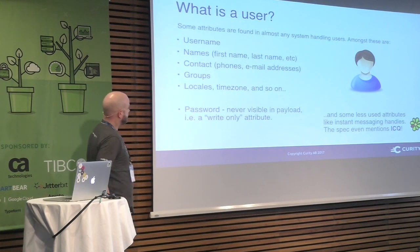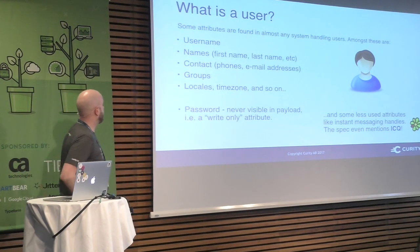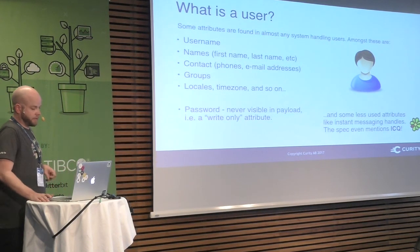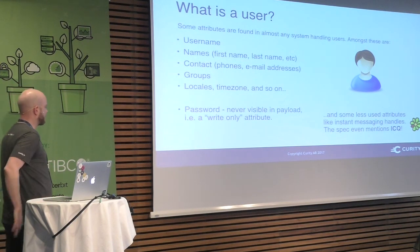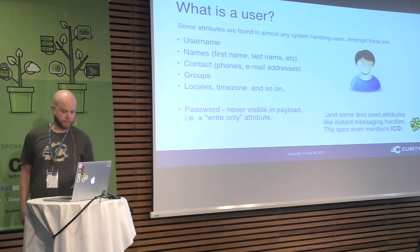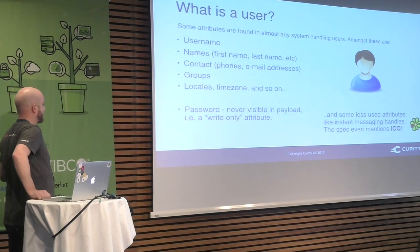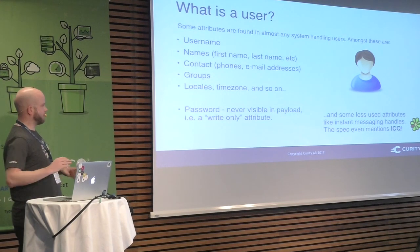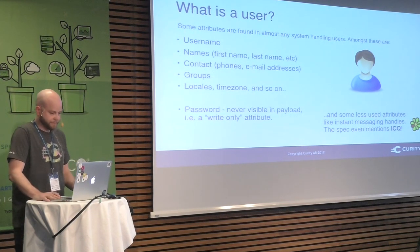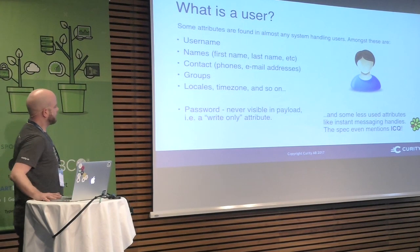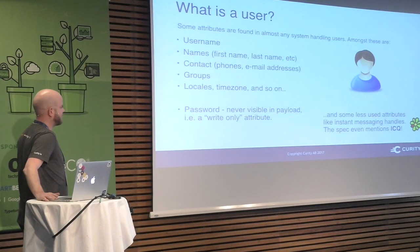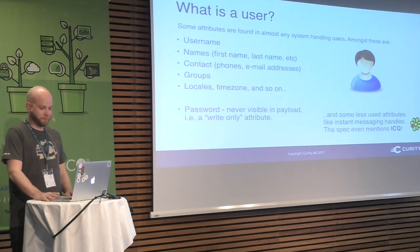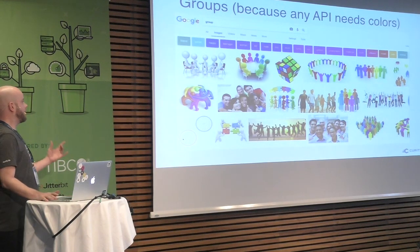Common user attributes include: username, name components (first name, last name, family name), means of contact like phone numbers, email addresses, and physical addresses, groups, preferred locale, time zones, and so on. Password is a bit special in SCIM — it's an attribute that's handled, but you can never see a password when you retrieve a user resource. You can still query with a username and password for authentication, but you can't get a list of passwords or a password for a specific user. Less common attributes include instant messaging handles — the spec even mentions ICQ.